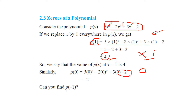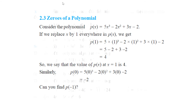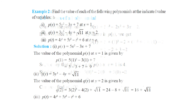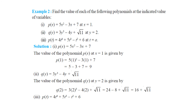Let us find out by putting x equal to minus 1. I'll take you with an example. We have a proper example. So this one: 5x squared minus 3x plus 7. We have to find which value of x, at x equal to 1.